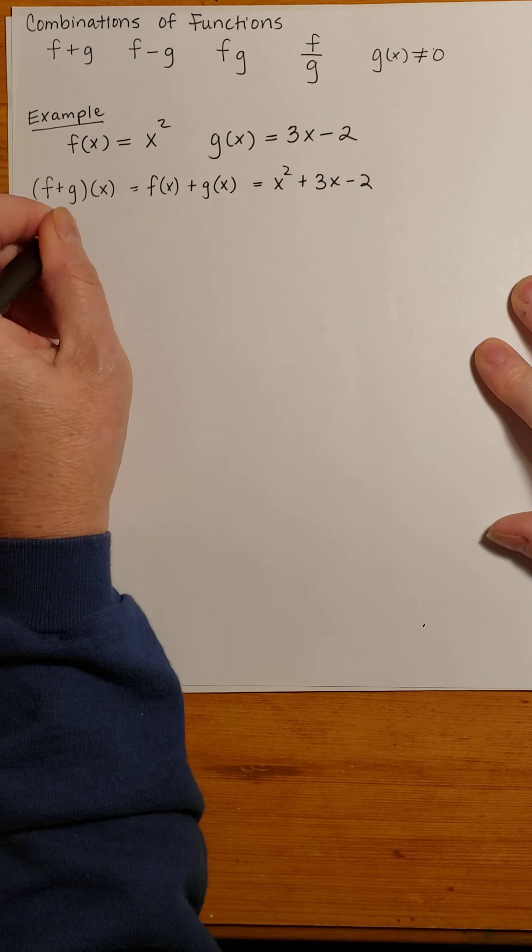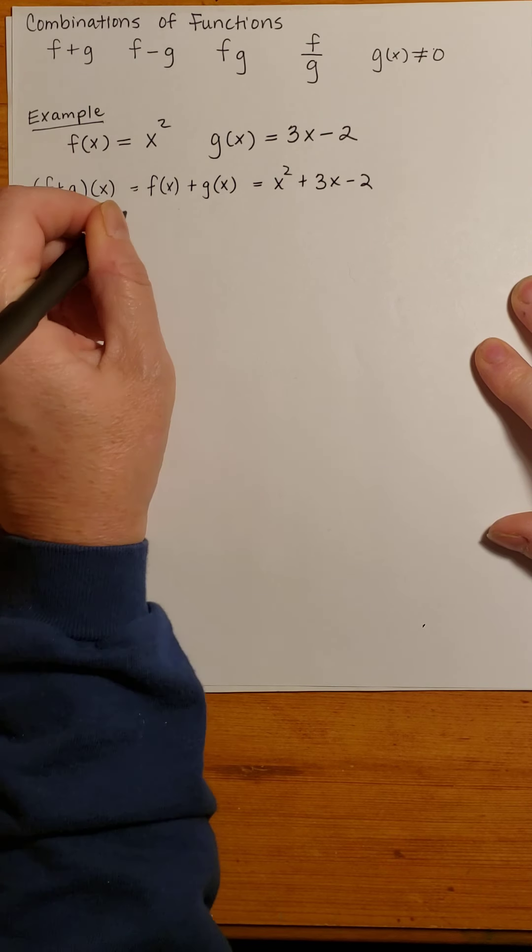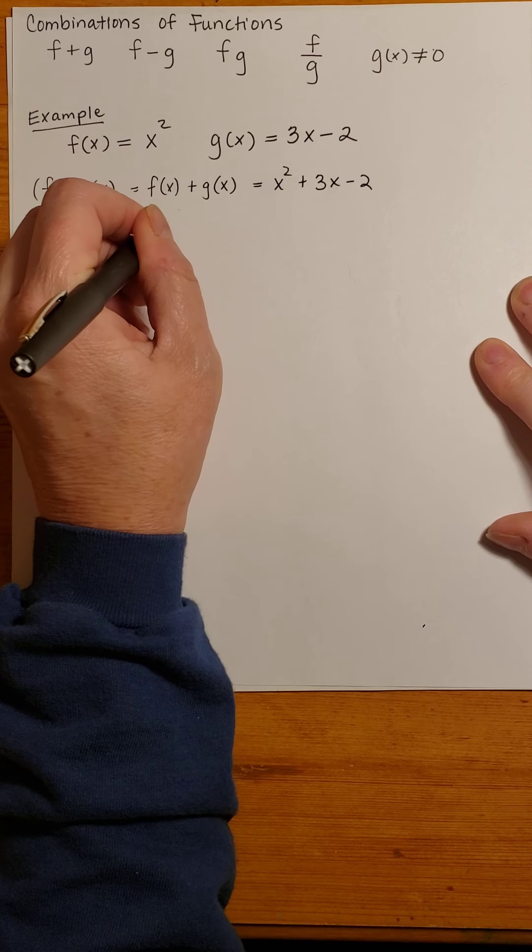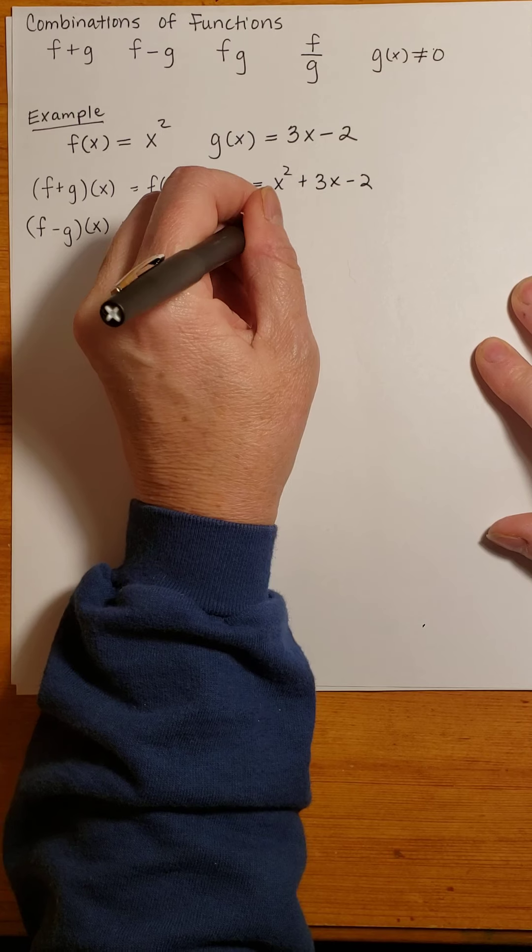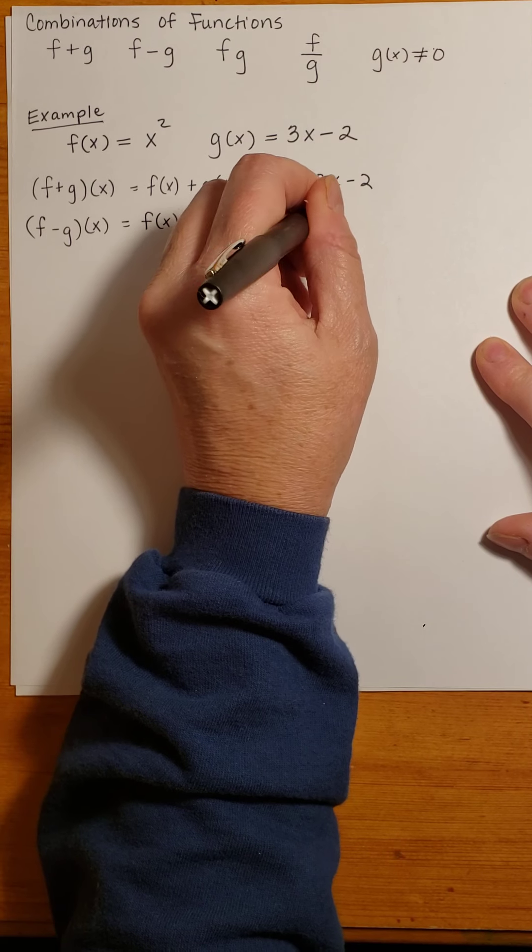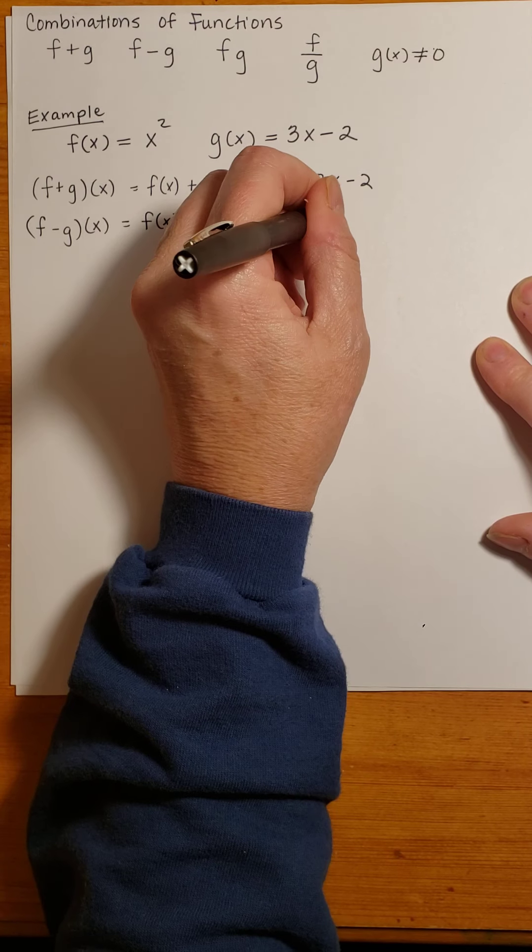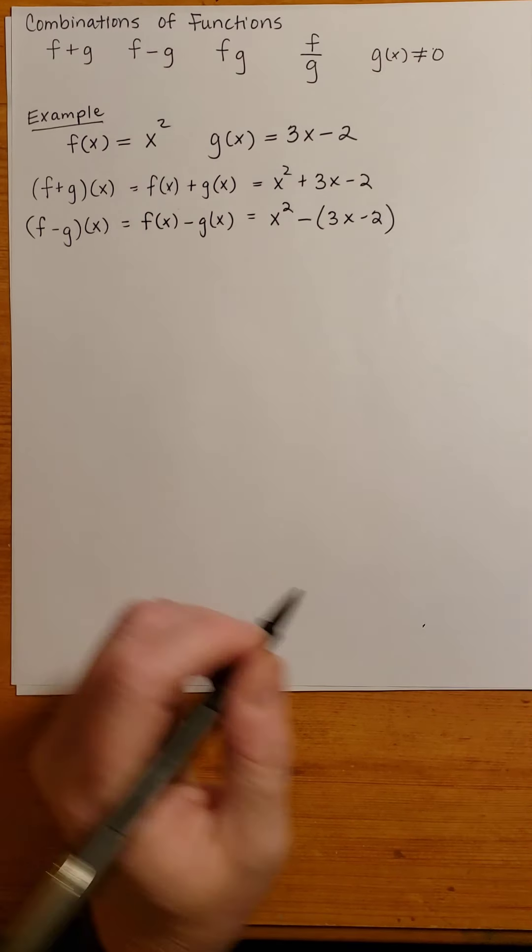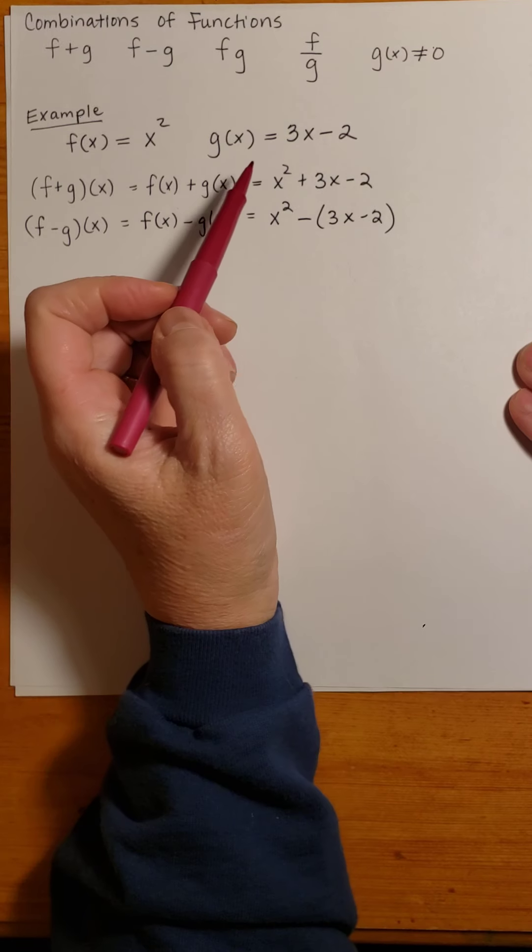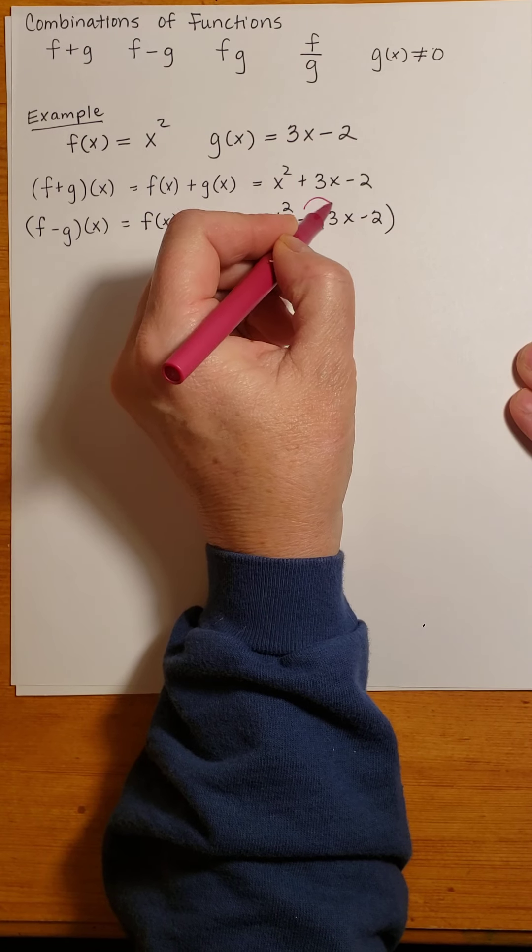(f-g)(x) is f(x) - g(x). So now it's x² minus g(x), which is 3x - 2. And since I'm subtracting the entire function g(x), I need to distribute this negative.